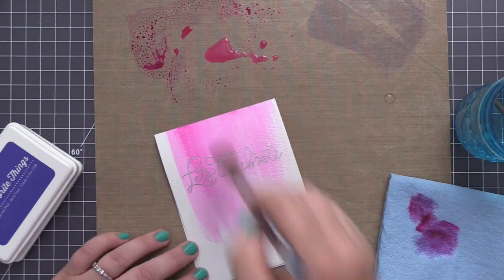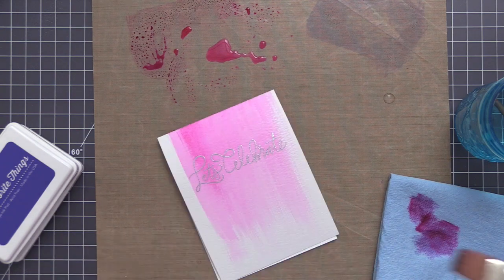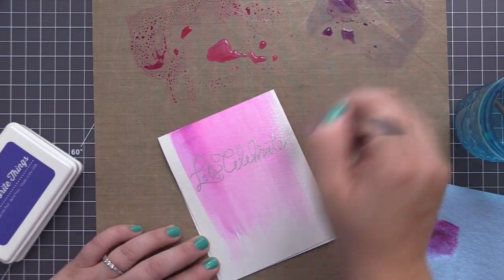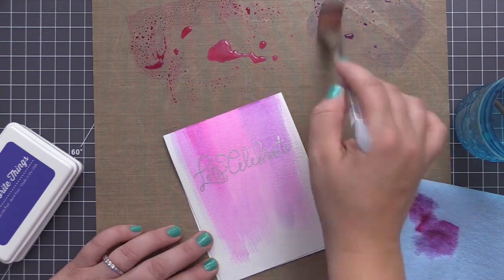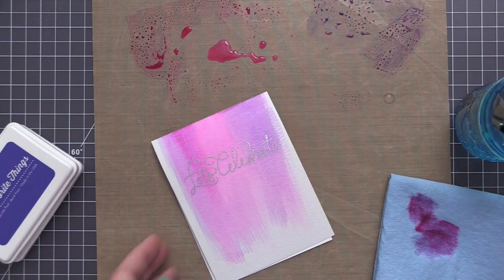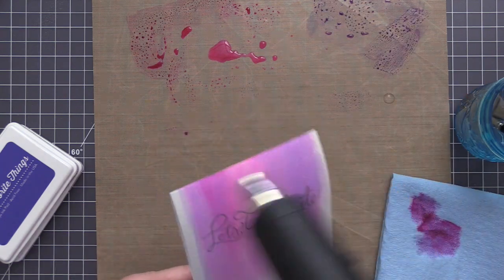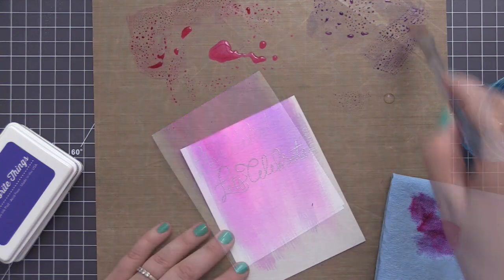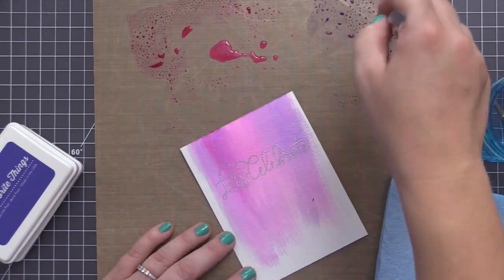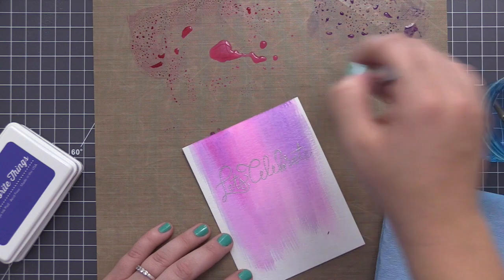I have the paper towel there because you don't want your paintbrush super wet. If you do, it's just going to bleed all over the card front. We kind of want to have the look of the paint stroke. You can see at the bottom, I have the little strokes that the paintbrush is leaving on the card front. That's achieved by making sure that the paintbrush is a little bit drier rather than really, really wet.